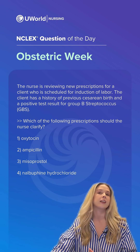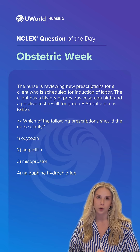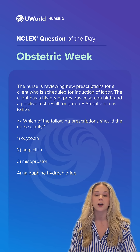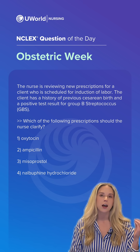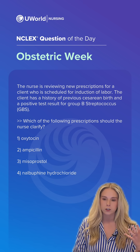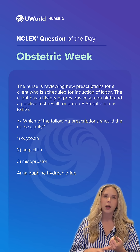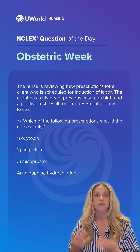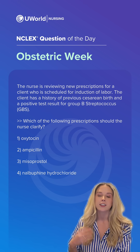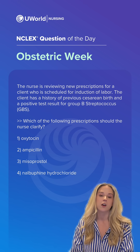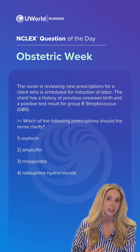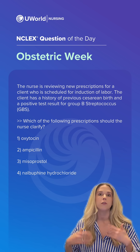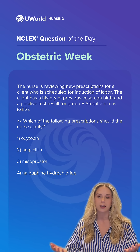Misoprostol is a cervical ripening agent used before the onset of labor. What it does is help soften the cervix to make it more pliable, allowing for easier dilation and effacement. Additionally, misoprostol is a prostaglandin, so it can help stimulate frequent contractions and further progress labor.